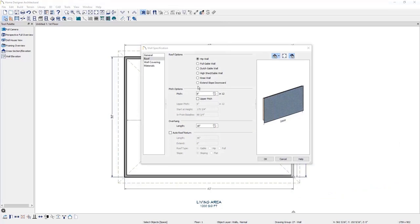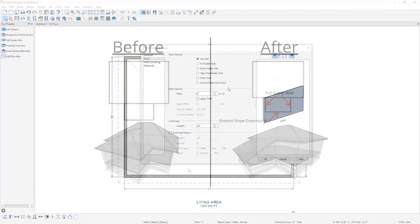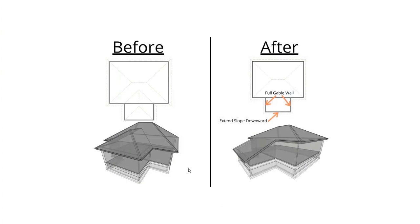The last roof option is Extend Slope Downward. When this is selected on a bumped out section of the structure, the program will continue making roof planes over the walls until they meet any overhang requirements. Without any walls specified as full gable or to extend the slope downward, the program builds the hip wall around the structure. When the two walls on the bump out are specified as full gable walls and the perpendicular wall is specified to extend slope downward, the slope continues off of the hip until it reaches the overhang requirement.